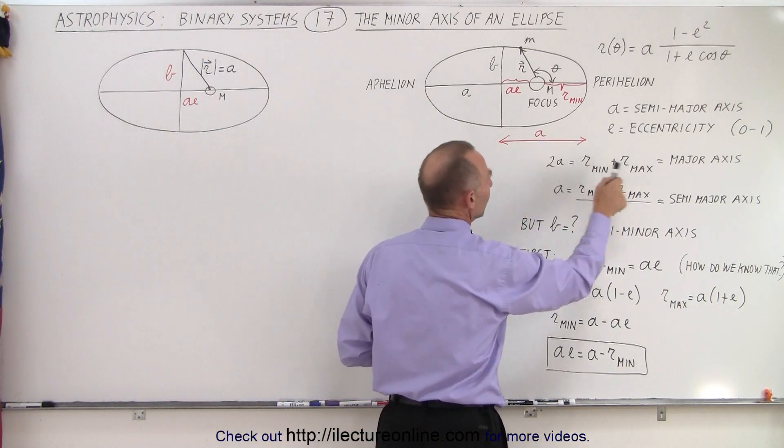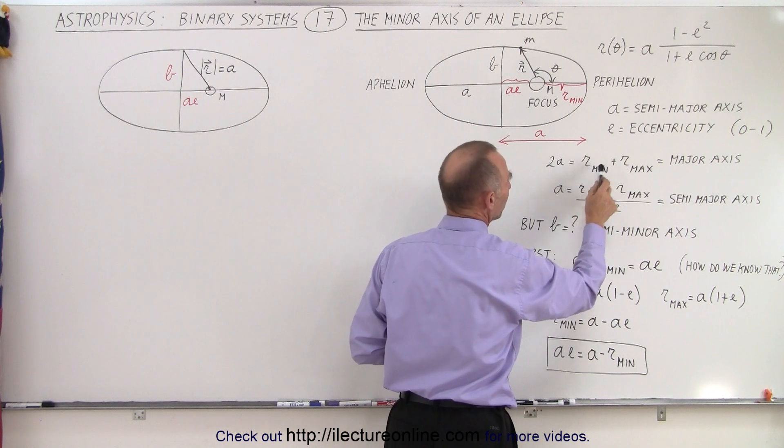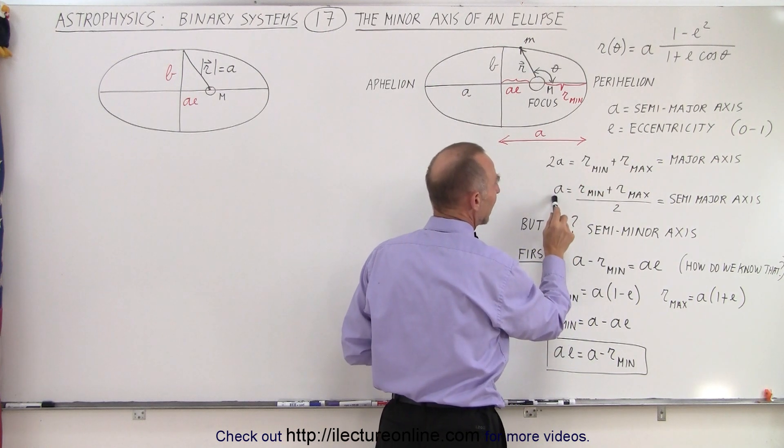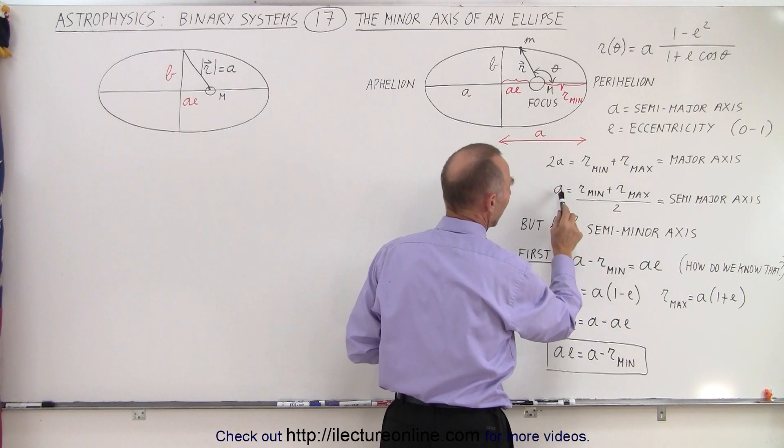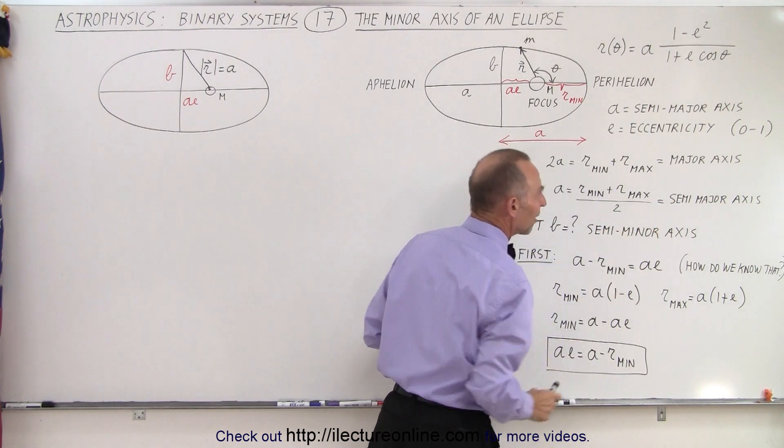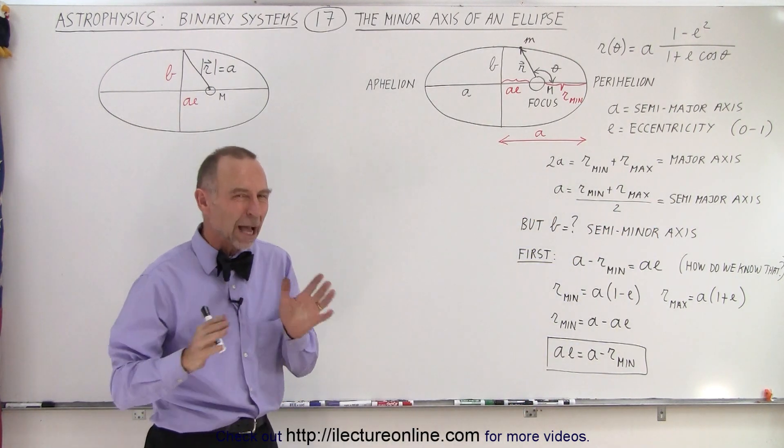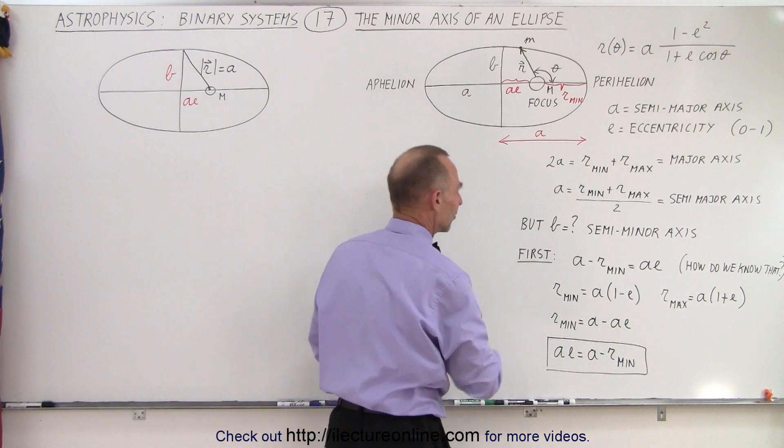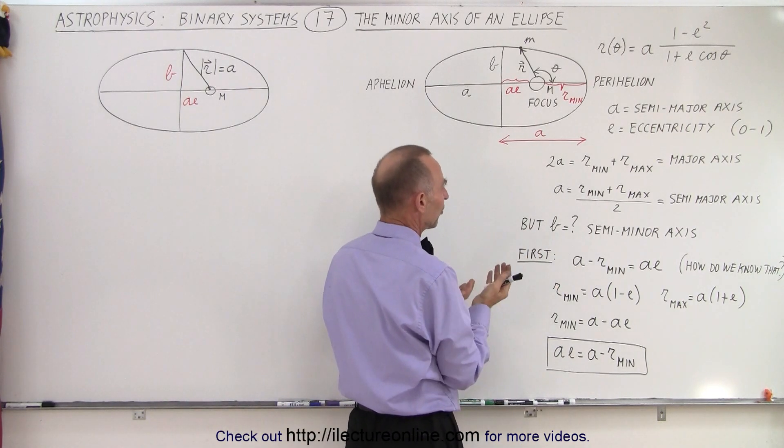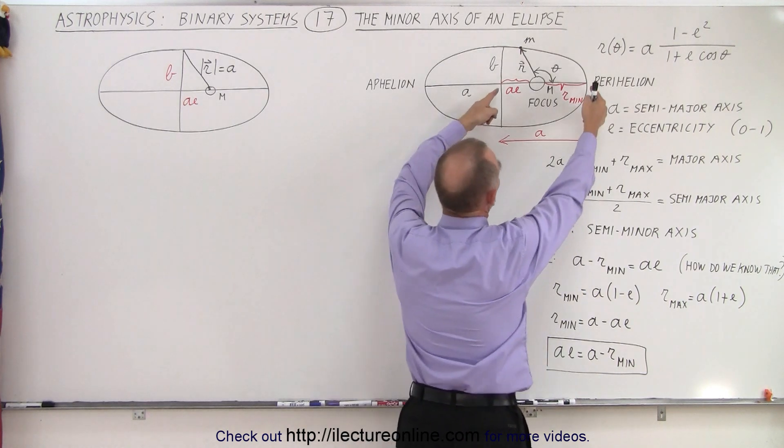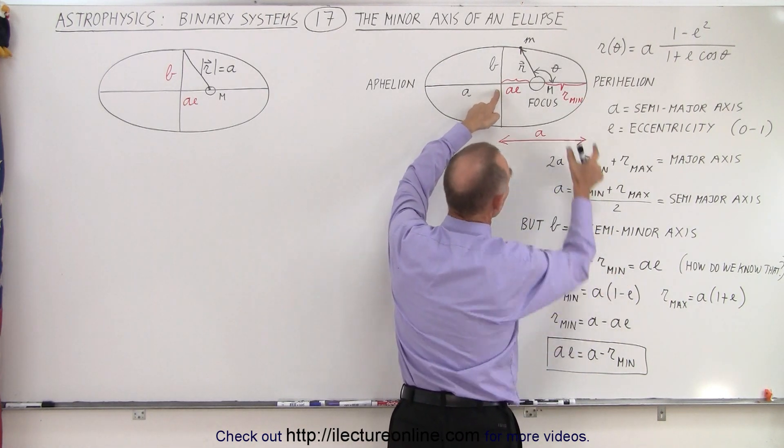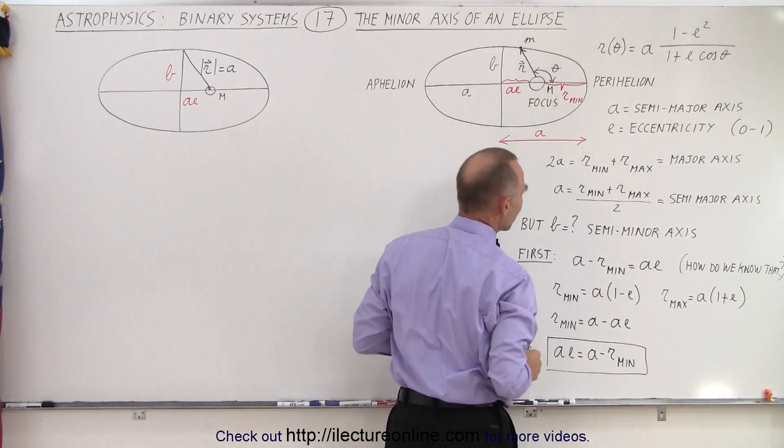Notice that 2A is the major axis, which is the sum of r_min plus r_max. And A, when we take (r_min + r_max)/2, we get half that distance A, which is the semi-major axis. But how do we define B? That's the key here. So first of all, what we can say is that A, which is this distance right here, minus r_min is this remaining distance A times e.